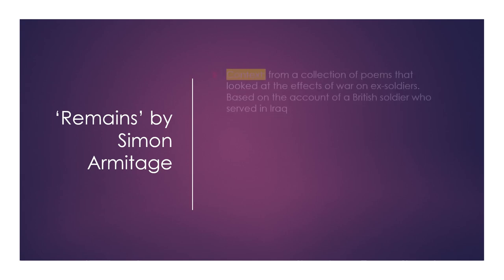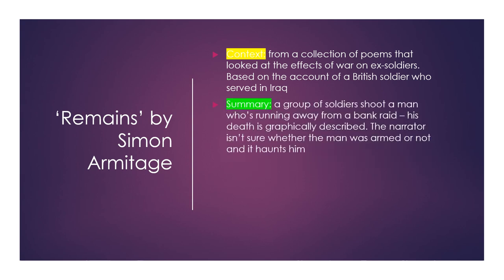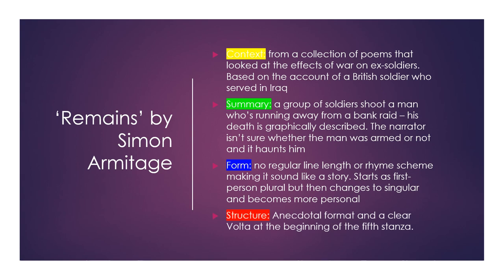Remains by Simon Armitage is from a collection of poems that looked at the effects of war on ex-soldiers. This one is based on the account of a British soldier who served in Iraq. A group of soldiers shoot a man who is running away from a bank raid; his death is graphically described. The narrator isn't sure whether the man was armed or not, and it haunts him. The form has no regular line length or rhyme scheme, making it sound like a story. It starts as first person plural but then changes to singular and becomes more personal. The structure is anecdotal in format with a clear volta at the beginning of the fifth stanza.